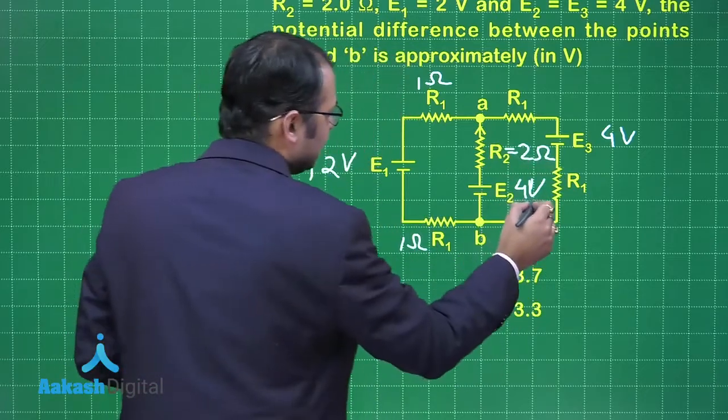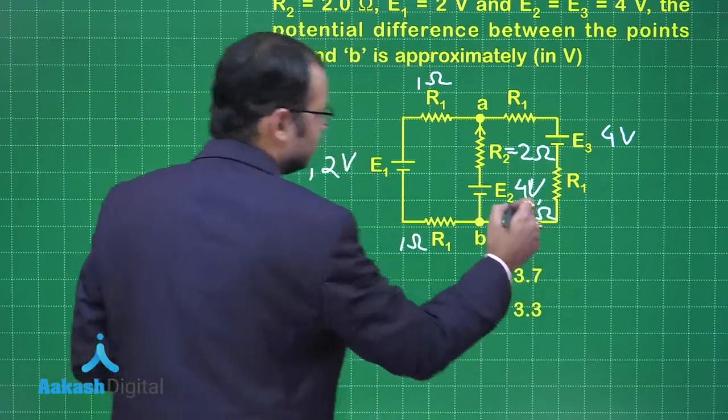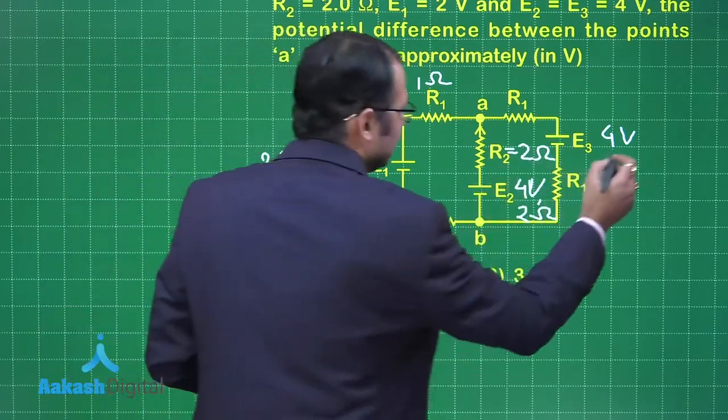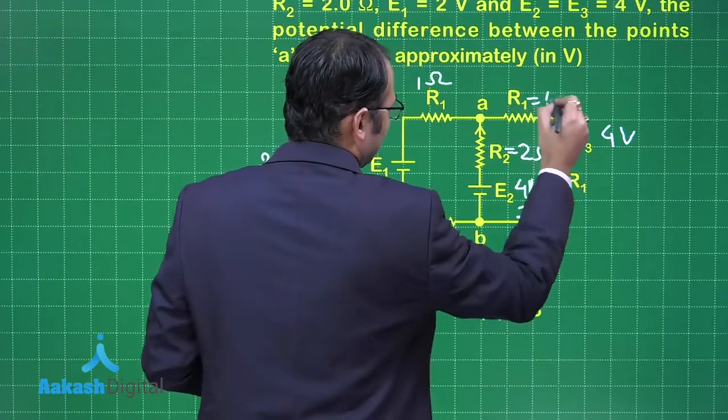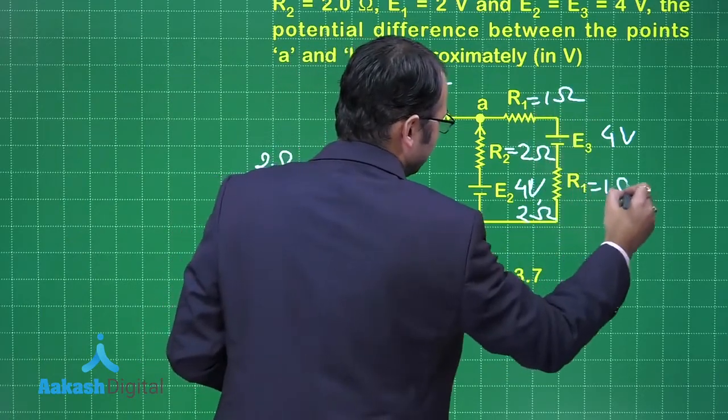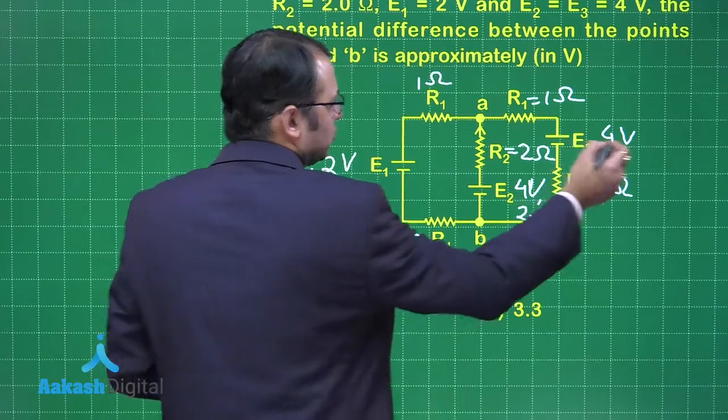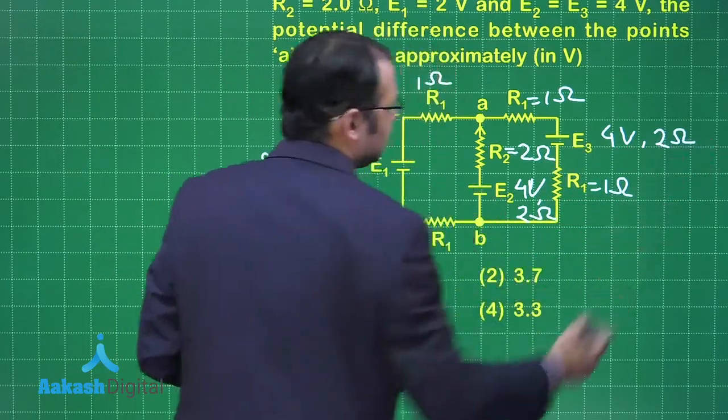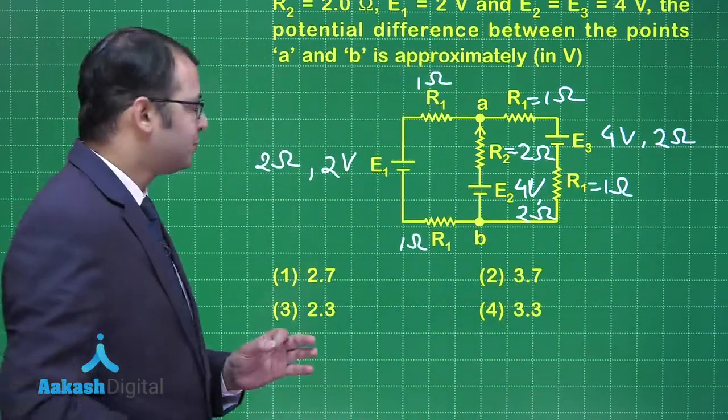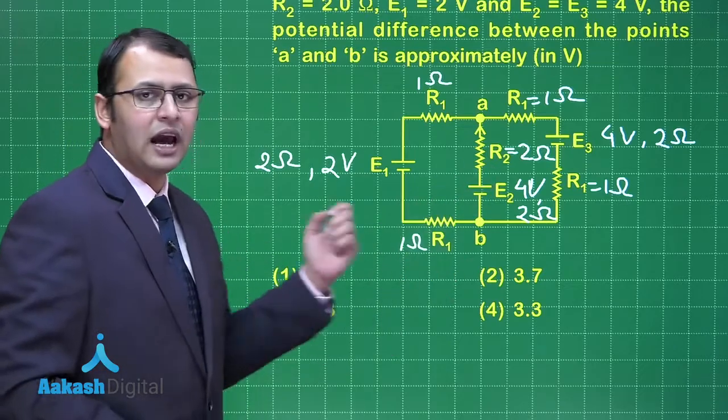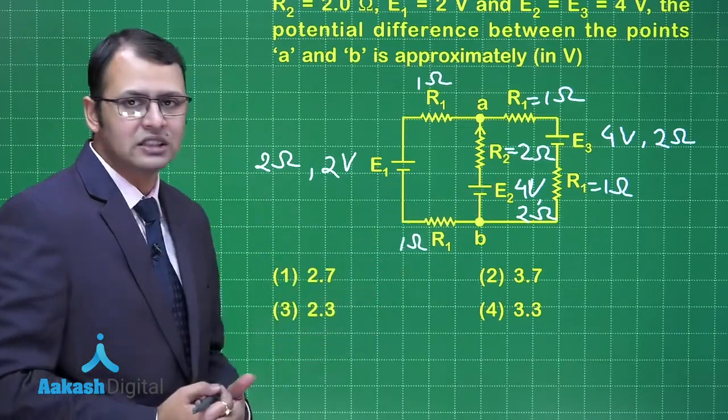For R₂, this is also 2 ohms, which can be treated as the internal resistance of the second cell. Here, this 1 ohm and this 1 ohm R₁ are in series, so together they can also be treated as 2 ohms.